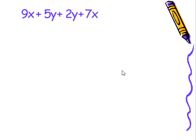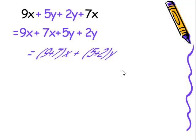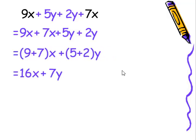When we take a look at this one, well, we can see we have a nine x and a plus seven x. Those are like terms and then we also have a plus five y and a plus two y and those are like. So now all we have to do is add the coefficients. We get 16 x plus seven y.